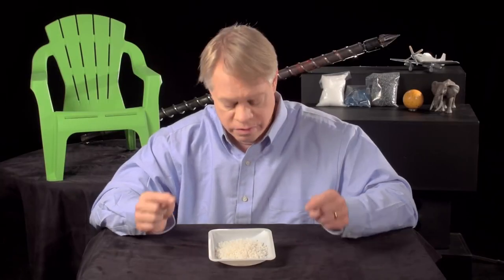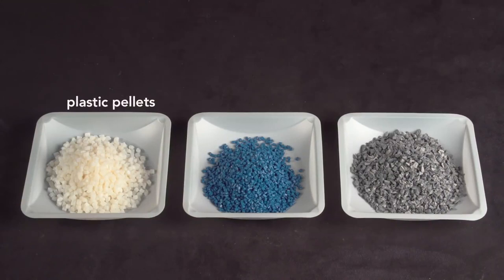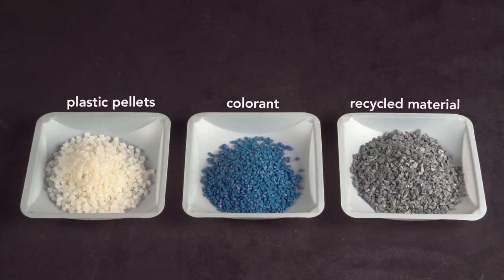All injection molded objects start with these plastic pellets, which are a few millimeters in diameter. They can be mixed with small amounts of pigment, called colorant, or with up to 15% recycled material then fed into the injection molding machine.